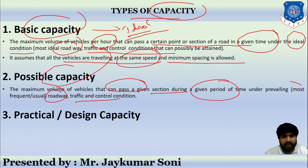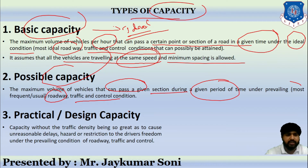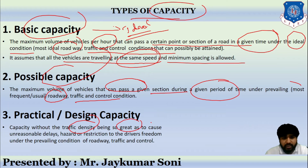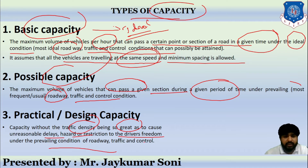The third type is practical or design capacity — the maximum capacity without traffic density becoming so great as to cause unreasonable delay, hazard, or restriction to drivers under prevailing conditions.